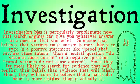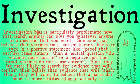Investigation bias is particularly problematic now that search engines can give you whatever answer you want. Someone who believes vaccines cause autism is more likely to type a positive statement like 'proof that vaccines cause autism' rather than a neutral question like 'do vaccines cause autism,' and definitely rather than 'proof that vaccines do not cause autism.' Since they're more likely to search for confirming evidence, they will come to believe that their belief is more justified than it actually is. Because search engines are driven to provide you what you want, they will provide answers you want even if those answers are less justified.